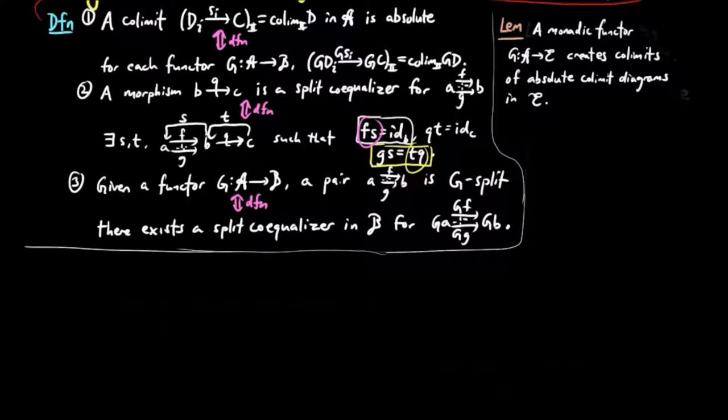The proof follows from the fact, which we have already shown, that G creates colimits in E which are preserved by T and T squared. And since absolute colimits are preserved by every functor, they are certainly preserved by T and T squared.